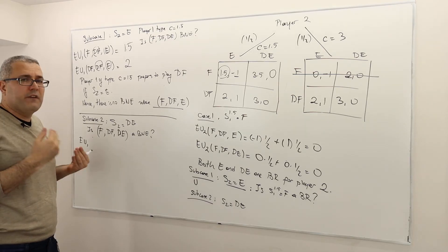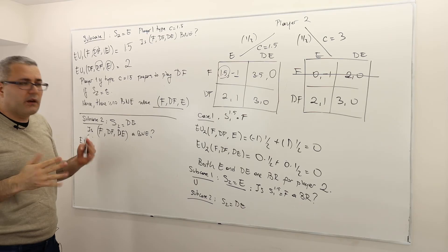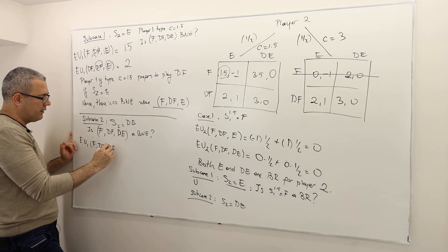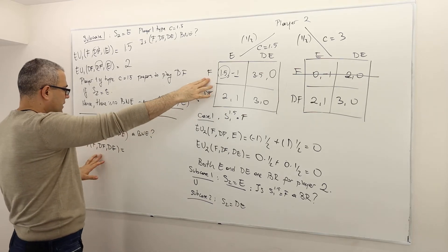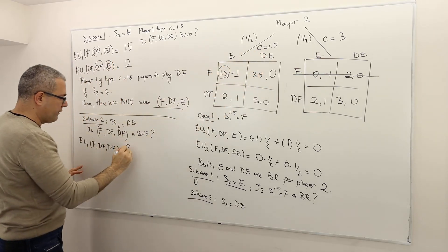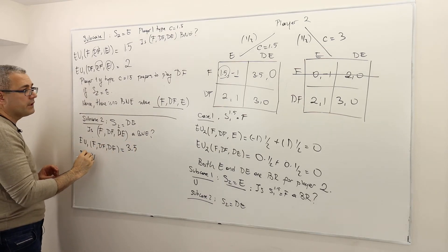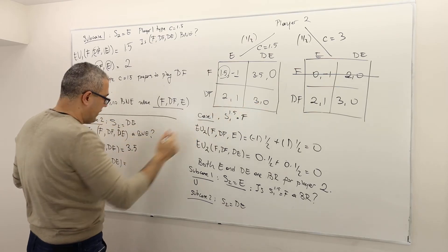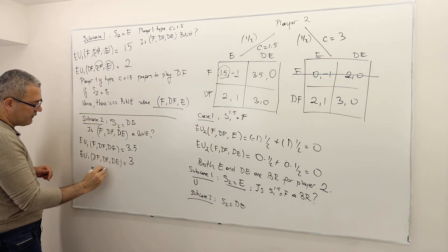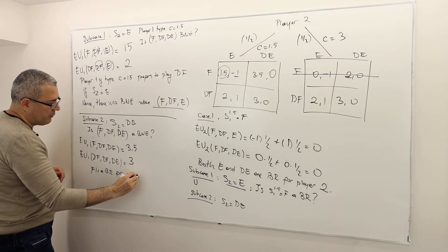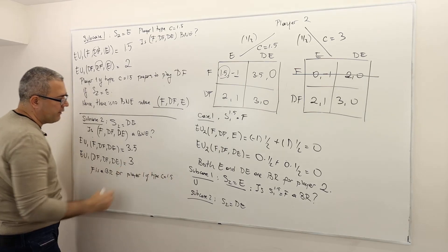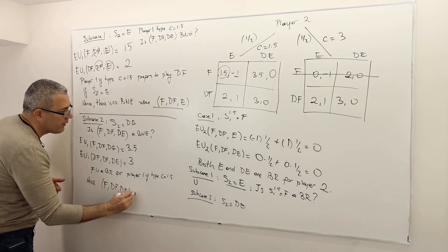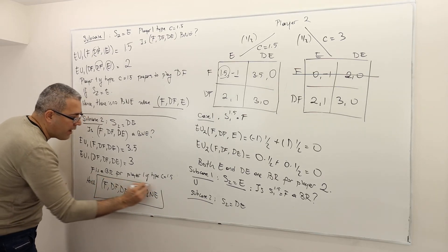So expected utility of player 1 if he plays F and his opponent is playing DE: it's 3.5. His expected utility if he plays don't fight instead, fixing the other's strategies, is 3. Hence, F is a best response for player 1 of type C equals 1.5. Hence, F, DF, DE is a Bayesian-Nash equilibrium. So I found one Bayesian-Nash equilibrium.